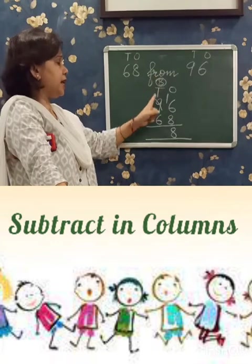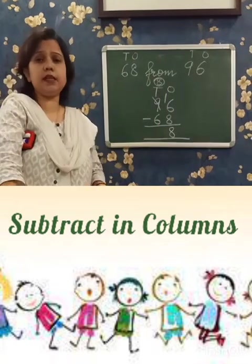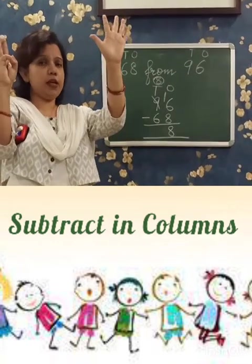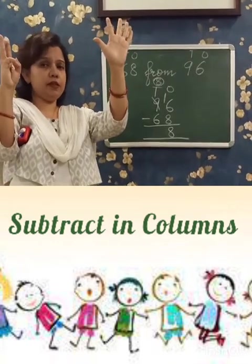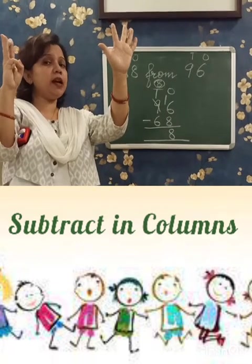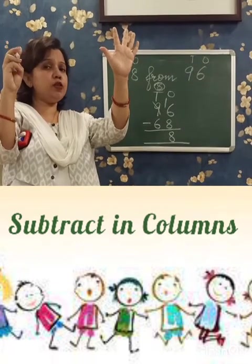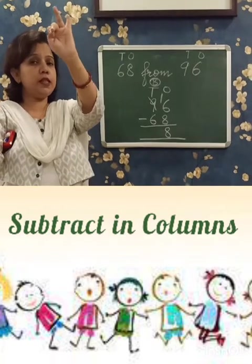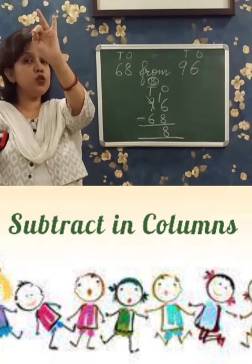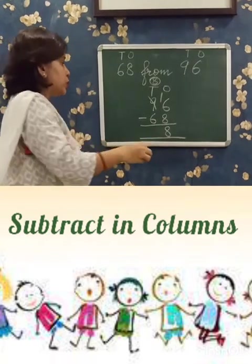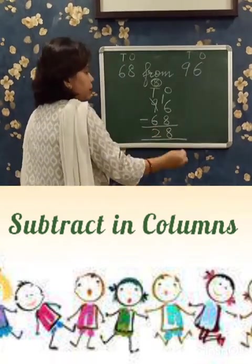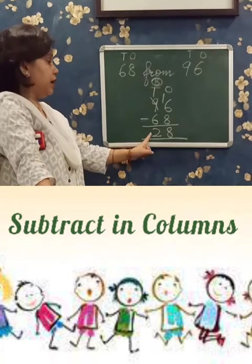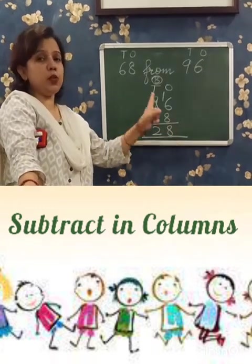10's place: 8 minus 6. We take out 8 fingers and from there we take away 6: 1, 2, 3, 4, 5, 6. What is left? 2. So it is 2 in the place of 10's. The difference is 28.